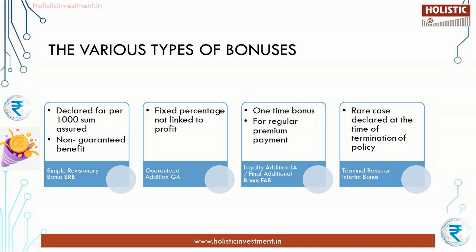The third type is Loyalty Addition or Final Additional Bonus, FAB. This is paid at maturity or on death. This one-time bonus is paid only if you pay the premium regularly without any default. It is paid for staying with the policy for the specified term, and it is paid from the surplus amount after paying the Simple Reversionary Bonus. There are also other bonuses apart from these three — some policies have a terminal bonus or interim bonus. Mostly all these bonuses are similar, or sometimes with slight changes in terms and conditions. They are paid at maturity or on death.